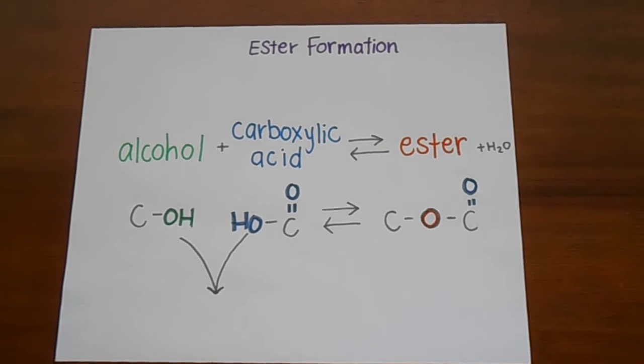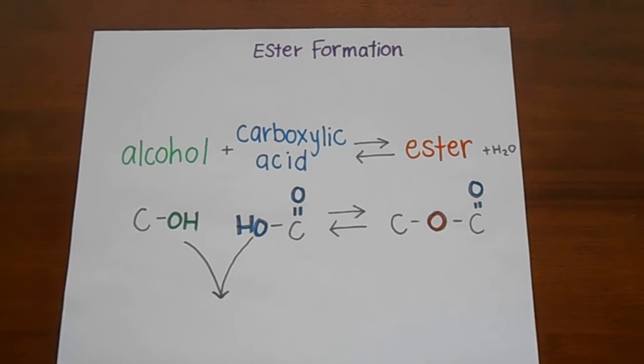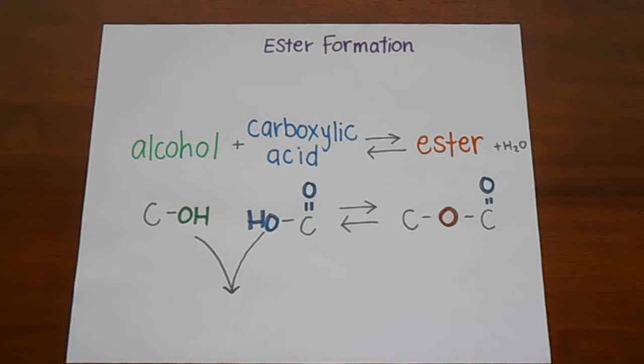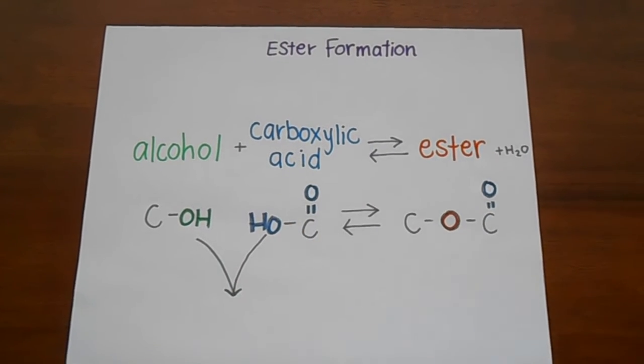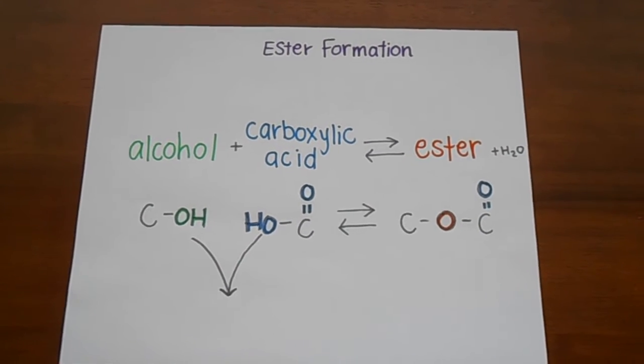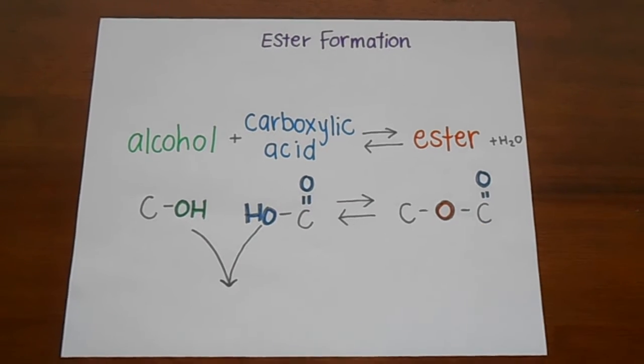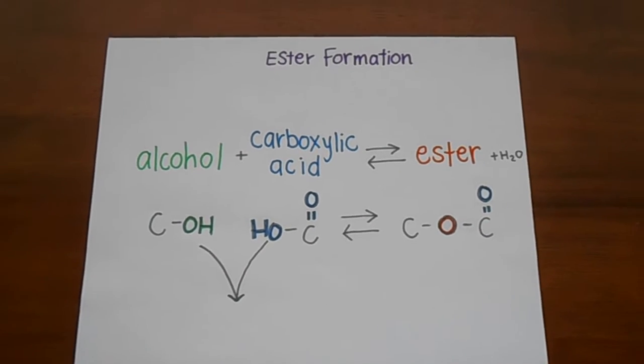When forming an ester, you will be combining the alcohol and the carboxylic acid. To do this, you will need to get rid of both of the OHs at the end of the chains and use a single O like this, which will be the connector of the two hydrocarbons.